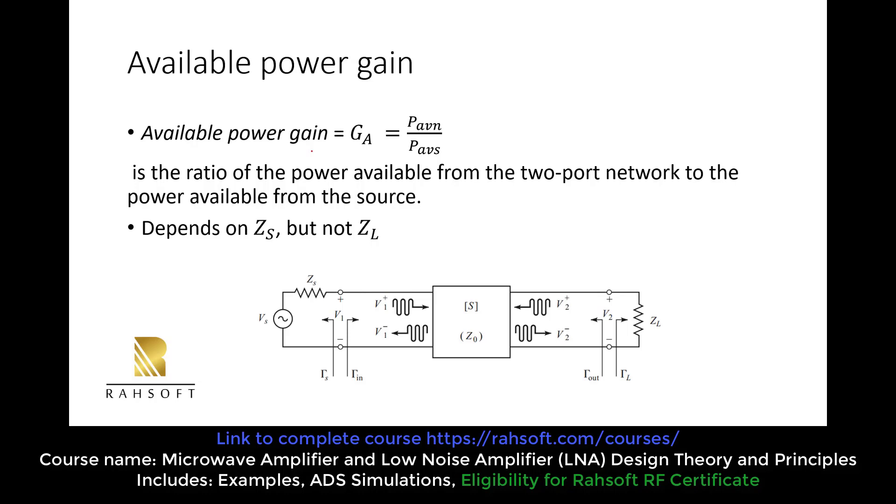PAVS is the available power at the source. We are going to talk about this, or we can also say that the maximum power can be delivered to the network. So let's write this. So PAVS is available power at source.